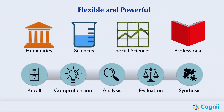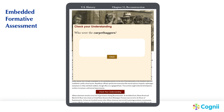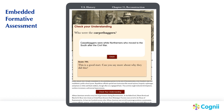Adam's textbook on U.S. history uses Cogni to provide formative assessment during the learning sequence. At the end of a section, Adam is asked to recall and explain important information. The virtual learning assistant checks his answer and gives feedback immediately. Adam sees not only a score, but also coaching on the part of his answer that needs improvement.